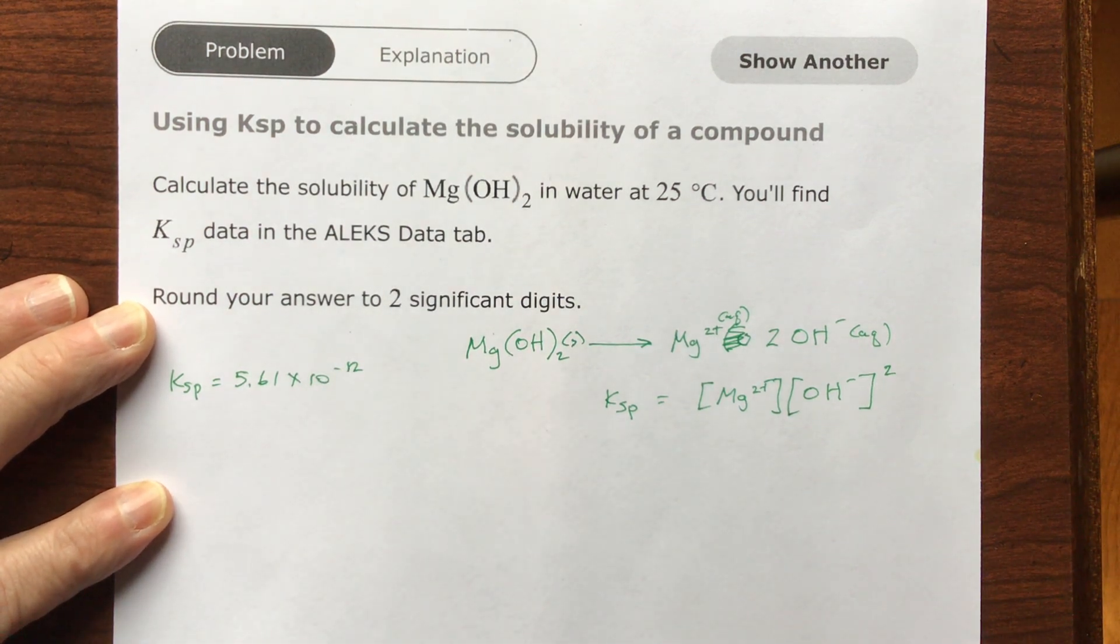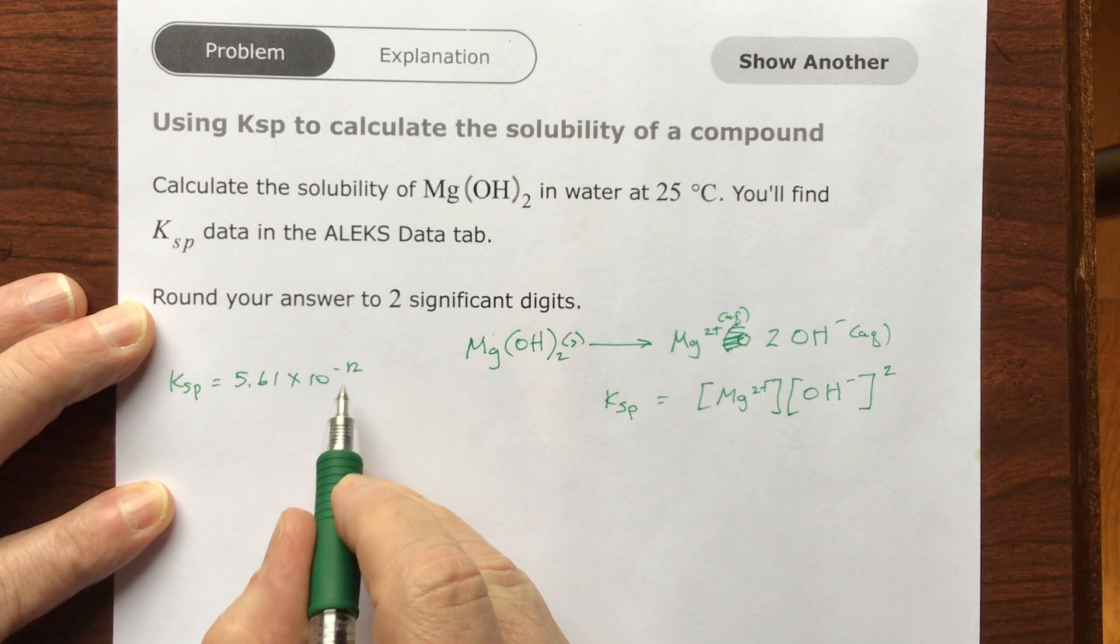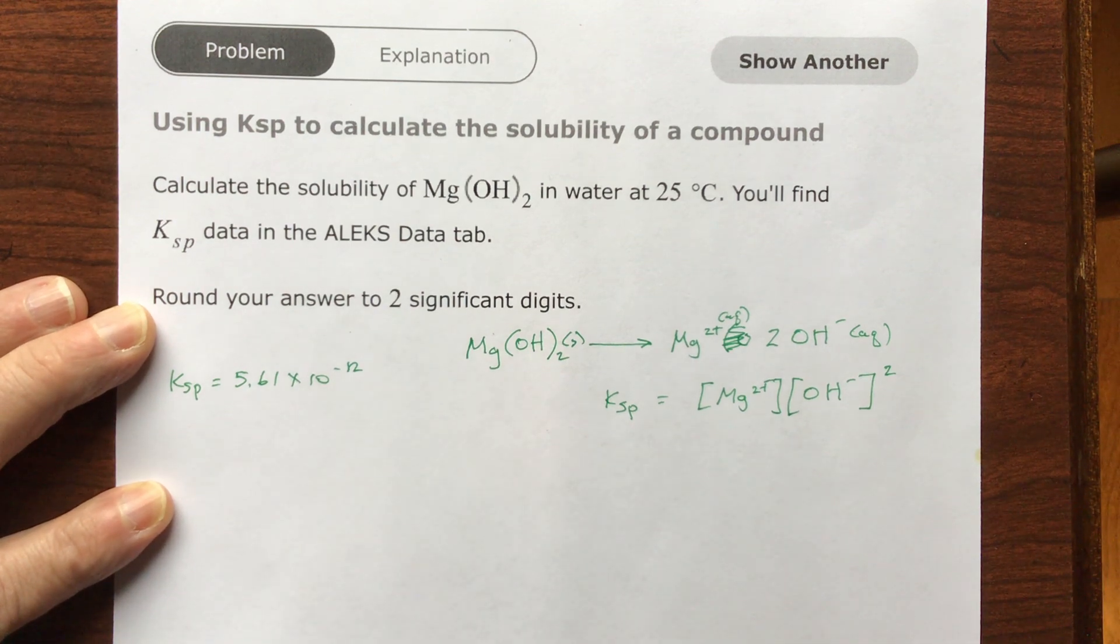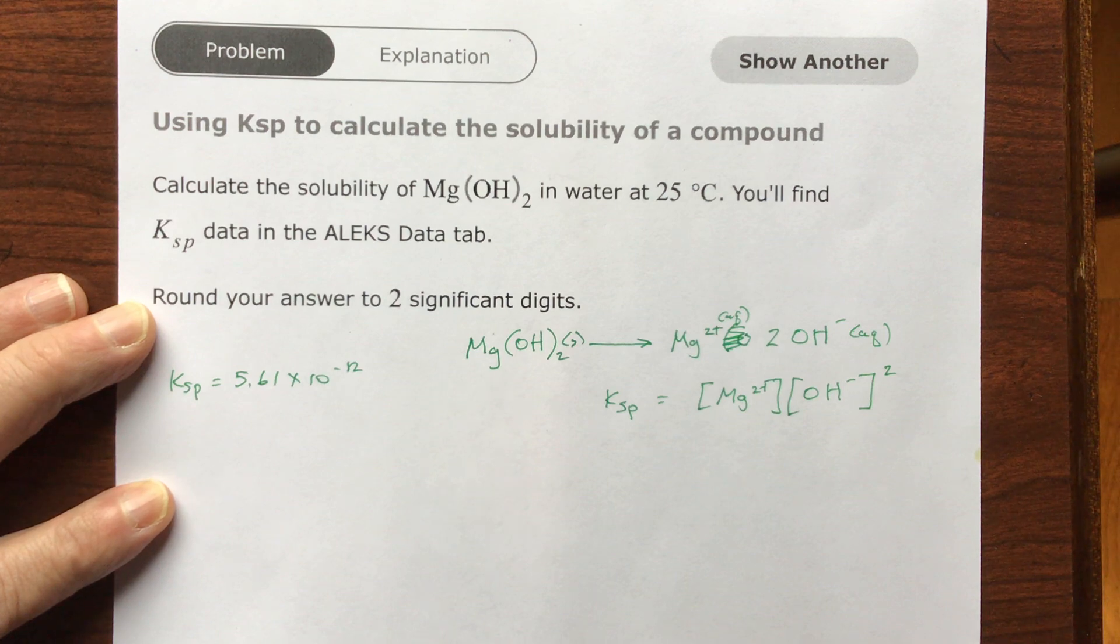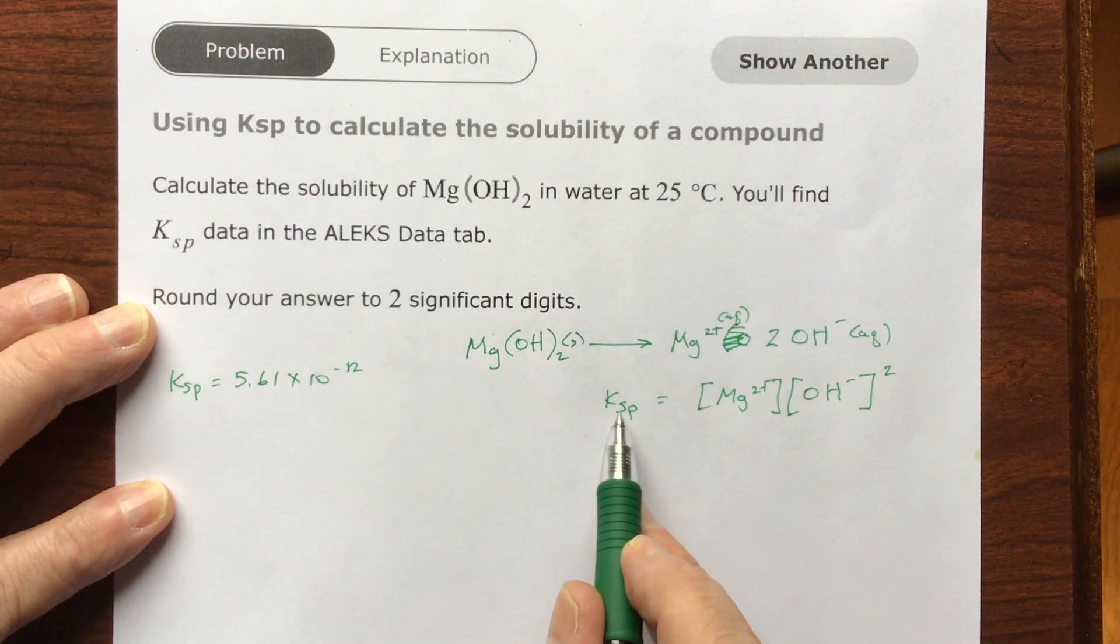So we know that's very insoluble, a very low, low number, negative exponent, so very little of it's going to dissolve, but some of it is, and they're asking how much. So we're going to see that this number is going to go here.